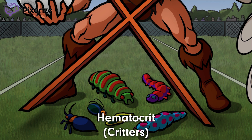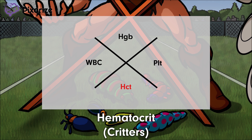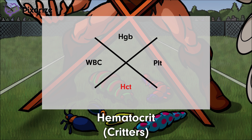Both values are generally measured to monitor changes in red blood cell counts. And naturally, our critters are on the ground beneath He-Man — because we're at an outdoor competition, bugs like these critters are always on the ground. This should help you remember that hematocrit is written at the bottom of our cross schematic.